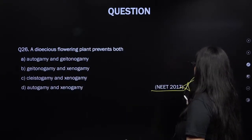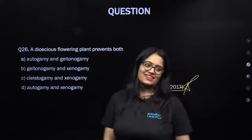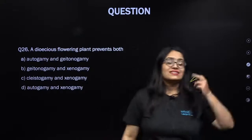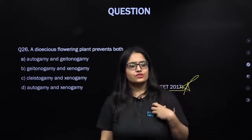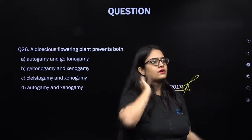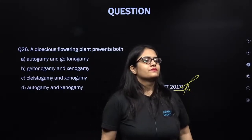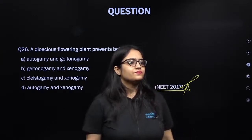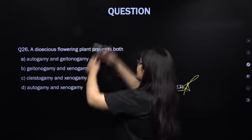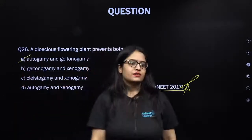From NEET 2017: in a dioecious flowering plant like papaya, both autogamy and geitonogamy can be prevented. This was already explained — papaya has separate male and female plants.